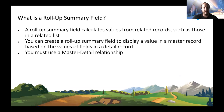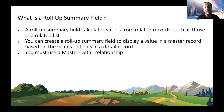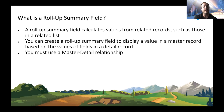A roll-up summary field is a field that calculates values from related records, such as related lists. You can create one to display a value in a master record based on values in fields of the detail record, or just a count of the number of records in the detail. You have to use a master-detail relationship — all other relationships cannot use roll-up summary fields.